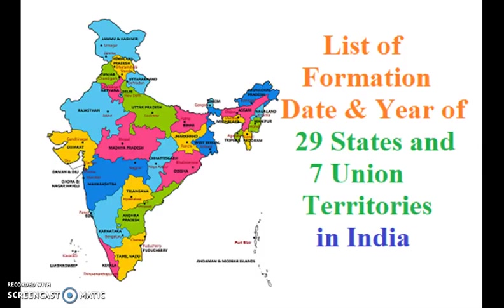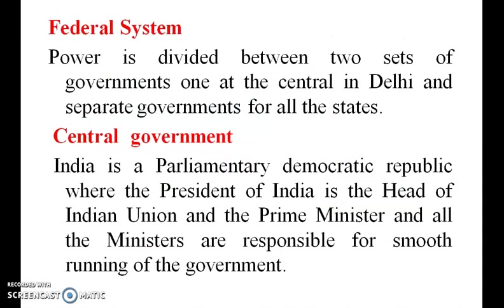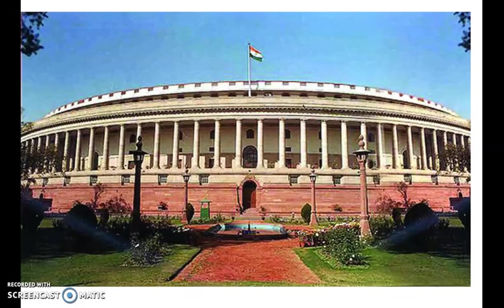What is a federal system? Power is divided between two sets of governments — one at the central level in Delhi and a separate government for all individual states. What is the central government? India is a Parliamentary Democratic Republic where the President of India is the head of the Indian Union, which is a combination of so many states. The Prime Minister and all the ministers are responsible for the smooth running of the government.